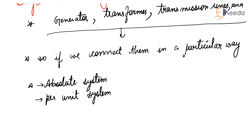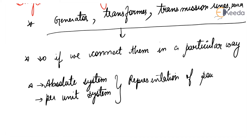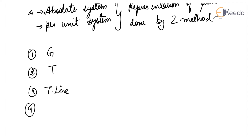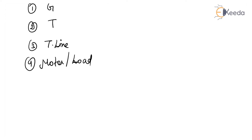Representation of power is done by two methods. The first method is the absolute system, and the second method is the per unit system. We basically choose the per unit system, and I'll tell you why. We have different components in our power system: generator, transformer, transmission line, and loads. This is the representation of a single line diagram using their standard symbols.